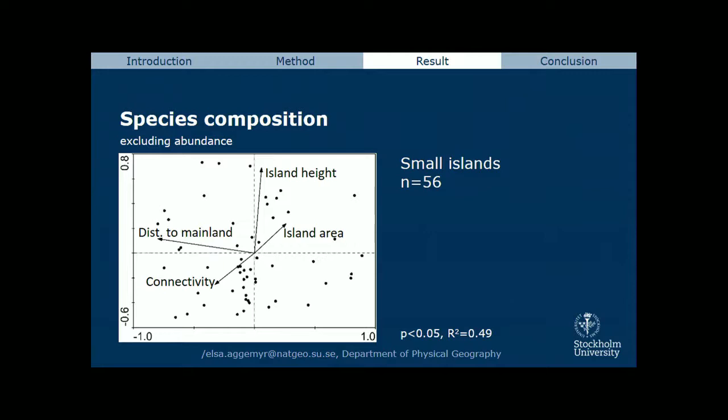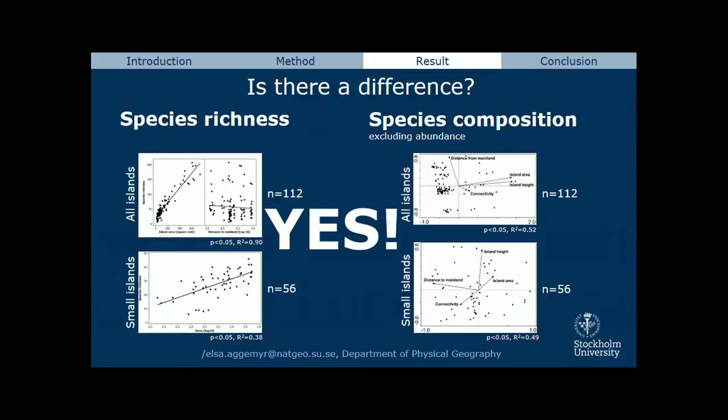Is there a difference depending on whether I use only species richness or include species identity? Yes — quite a big difference. A much more complicated pattern emerges when including species composition, even without abundance information. Just the species identity adds significant information.